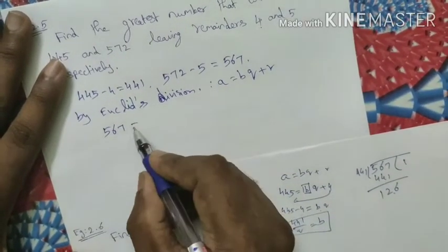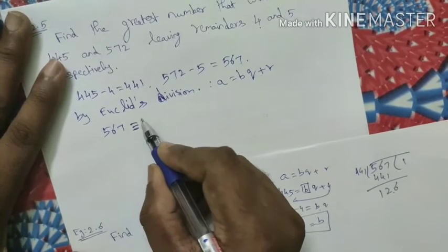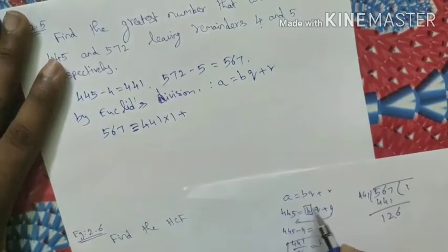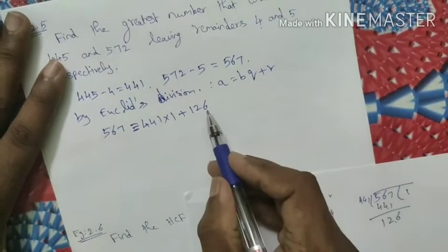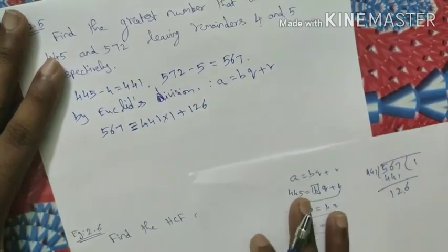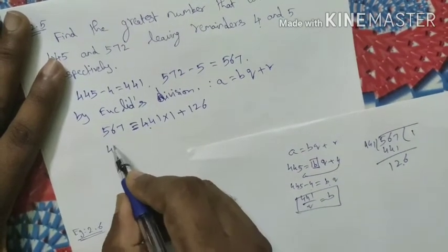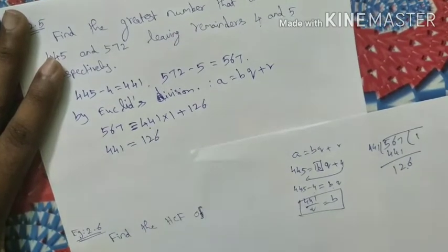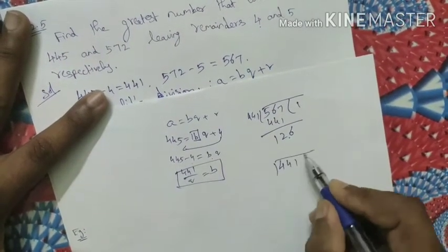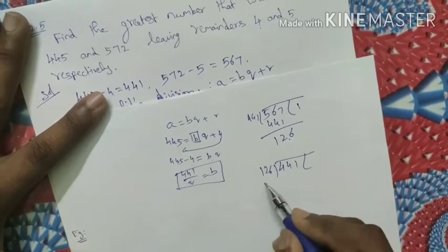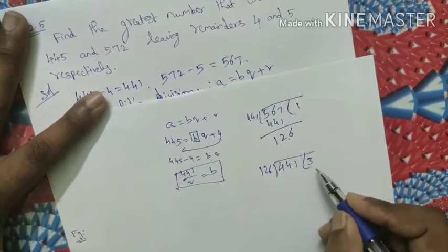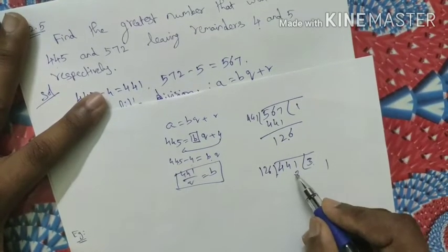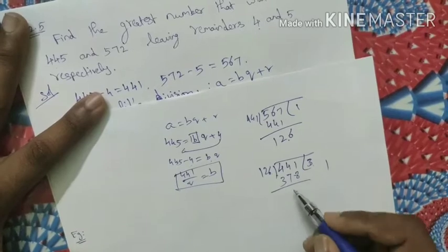So 567 equals 441 into 1 plus 126. The remainder is 126, which is not zero. Now 441 is divided by 126. Approximately 3 times: 3 times 126 is 378, and 441 minus 378 gives remainder 63.